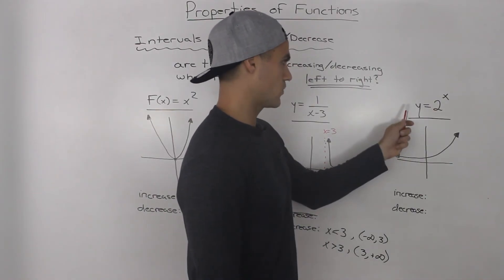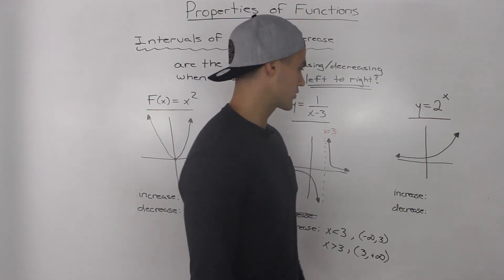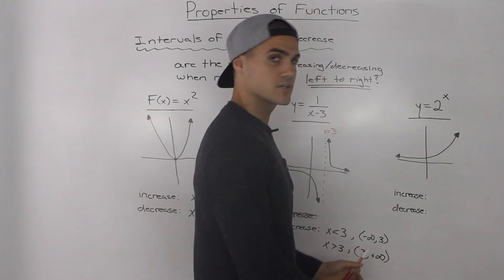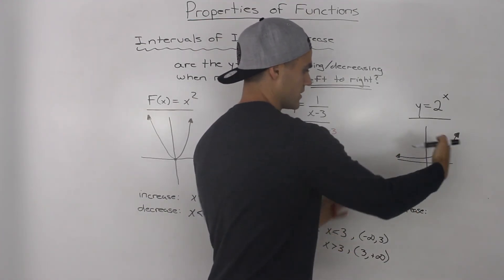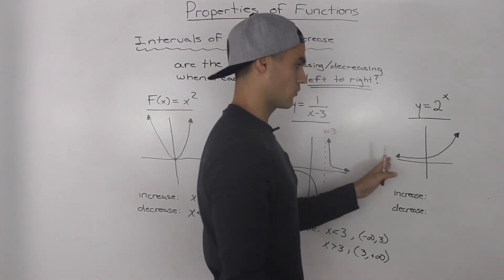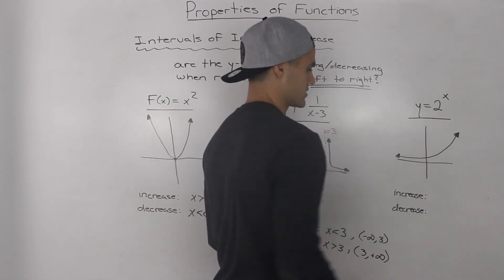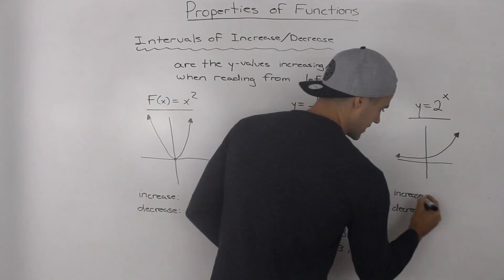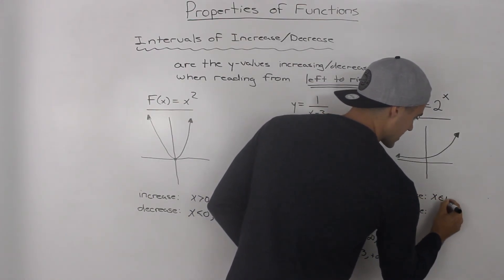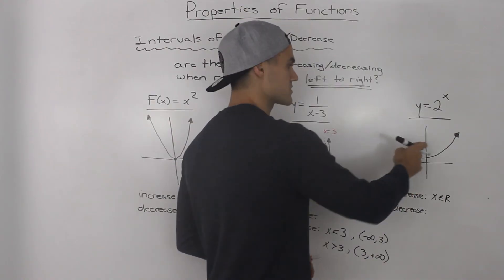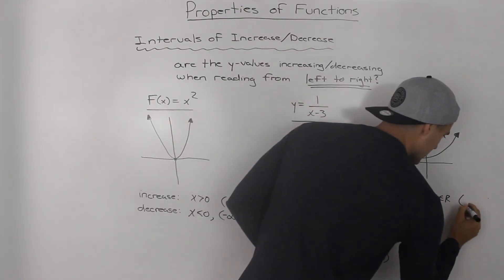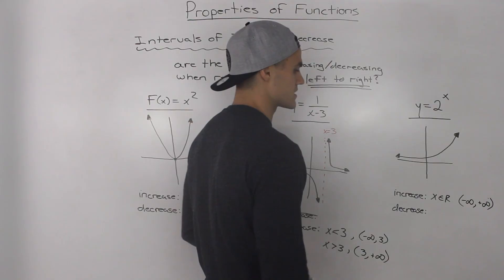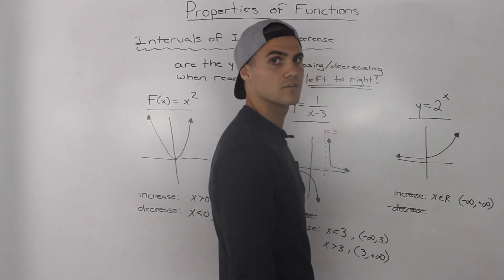Let's do a final example: y equals two to the power of x, an exponential function. If you graph it, it looks like this. When you read this function from left to right — from negative infinity to positive infinity — the y values are always increasing. So over the entire domain, the function is increasing. The interval of increase is x is an element of the real numbers, meaning for all x values, the function is always increasing. In interval notation, from negative infinity to positive infinity, it's always increasing, and there are no intervals of decrease.